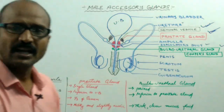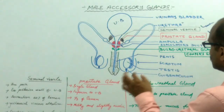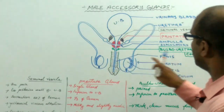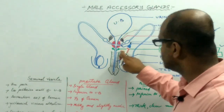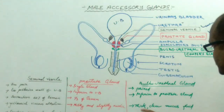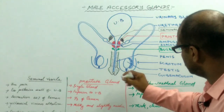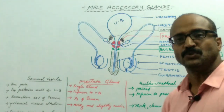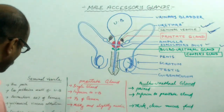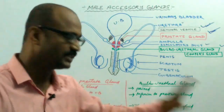Now coming to the bulbourethral gland. The bulbourethral gland is present at the region of the root of the penis or at the region of the urogenital diaphragm. It is also a paired gland, and its secretion is a thick and clear mucus fluid. The secretion drains into the penile urethra or spongy urethra prior to ejaculation. The secretion of the bulbourethral gland neutralizes the acidic environment of the urethra.